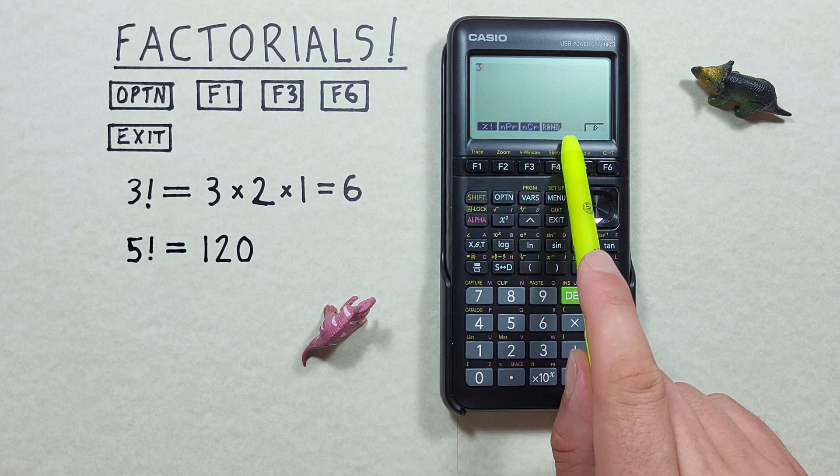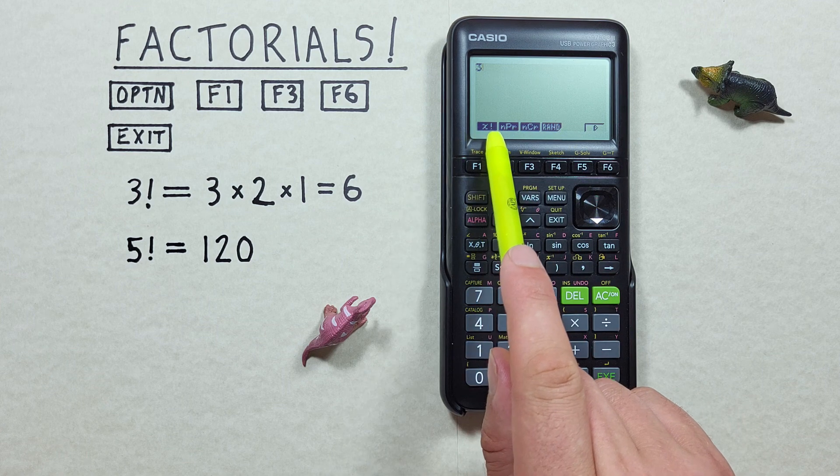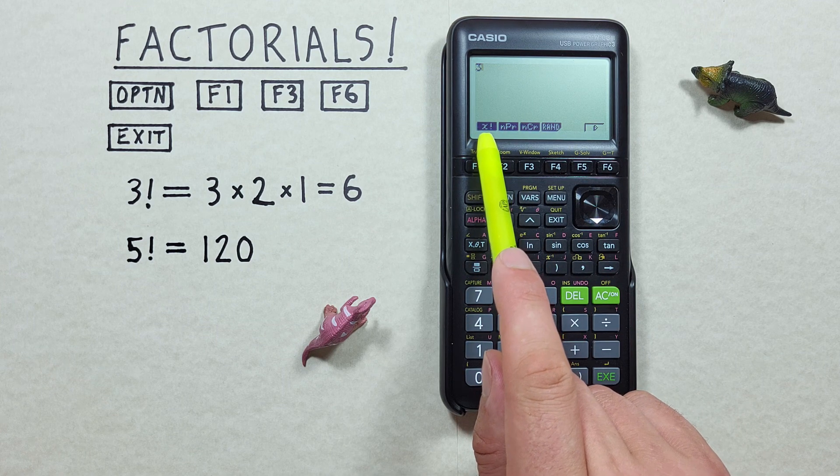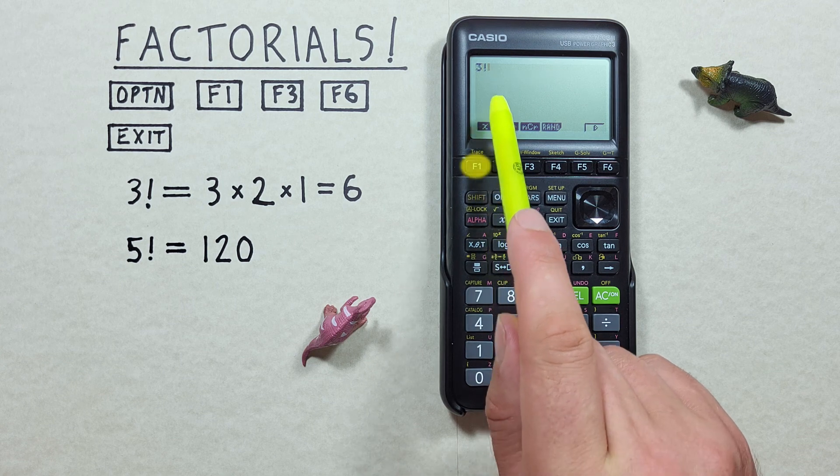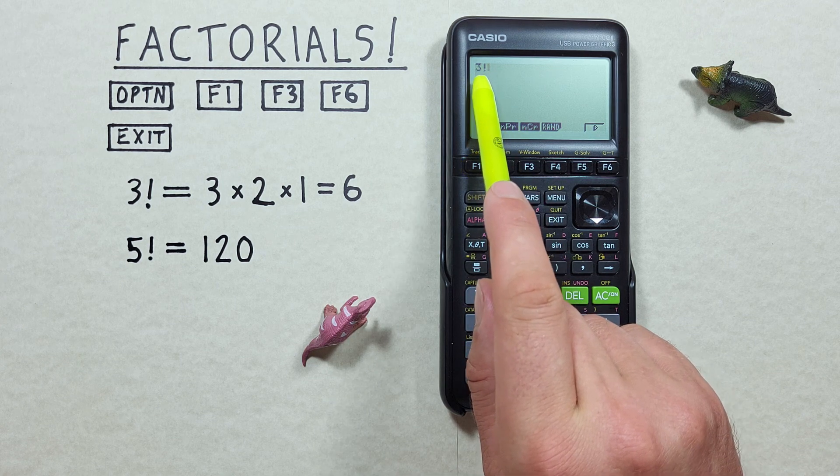And now we have these options. We see our first option or our F1 option is x factorial. So if we press that we see we now have a factorial symbol beside our 3.